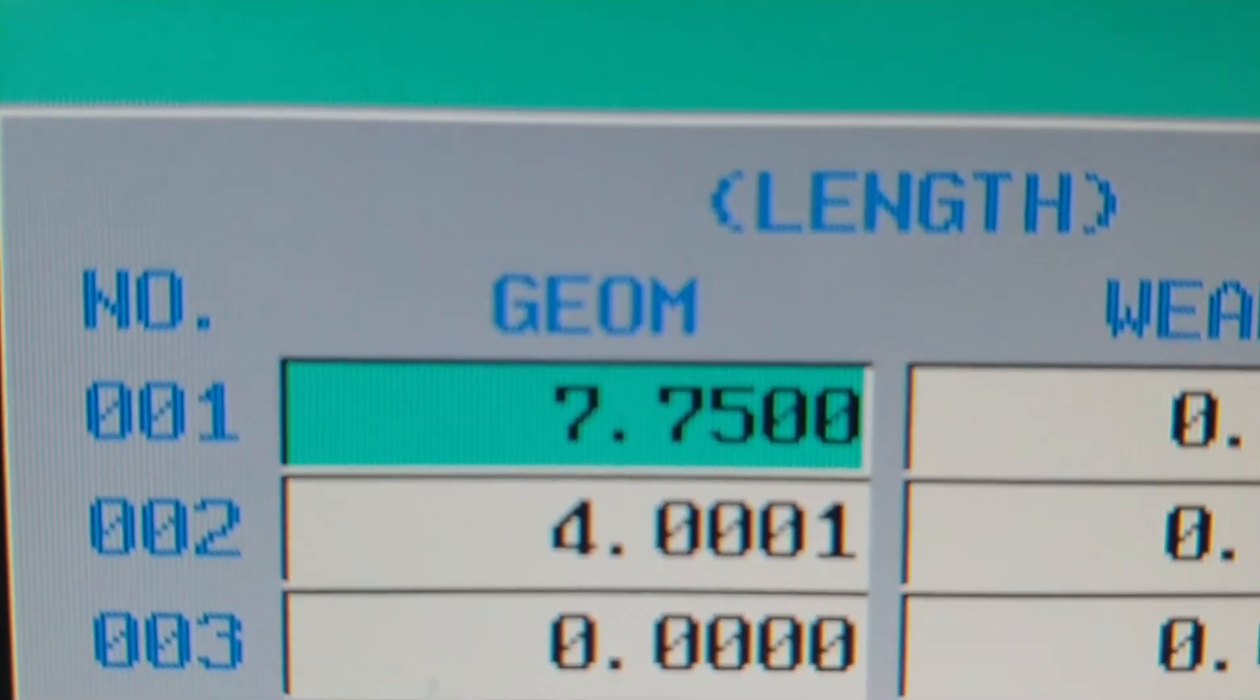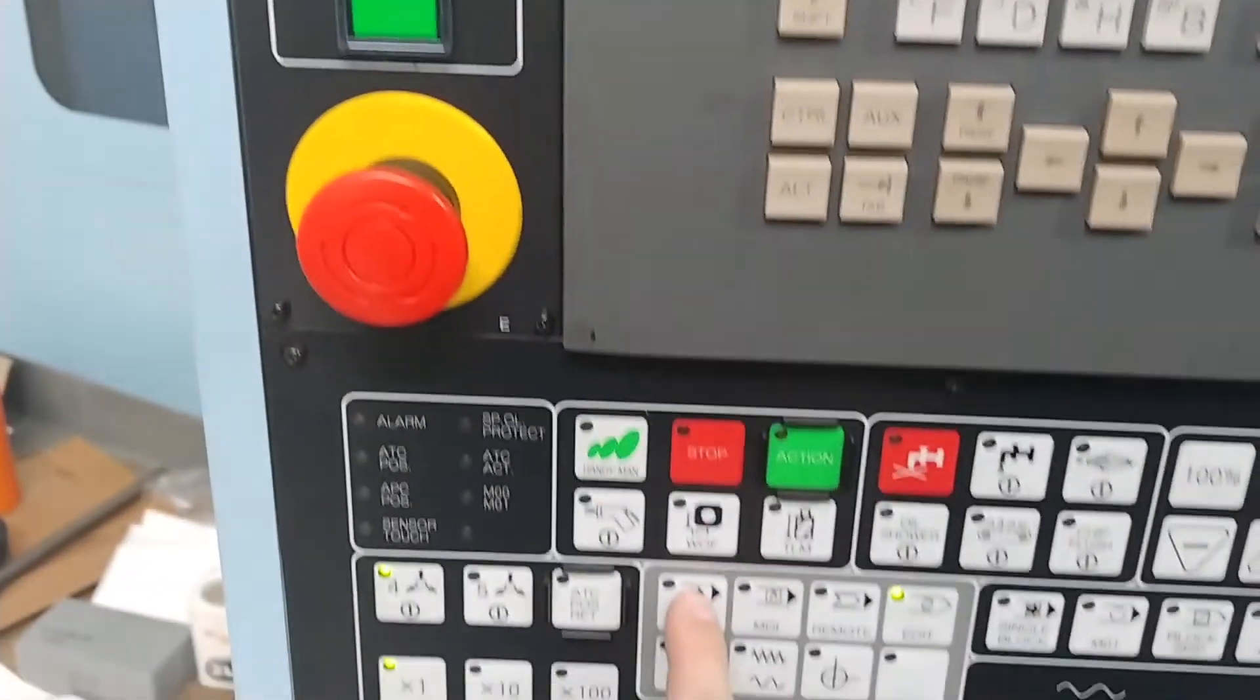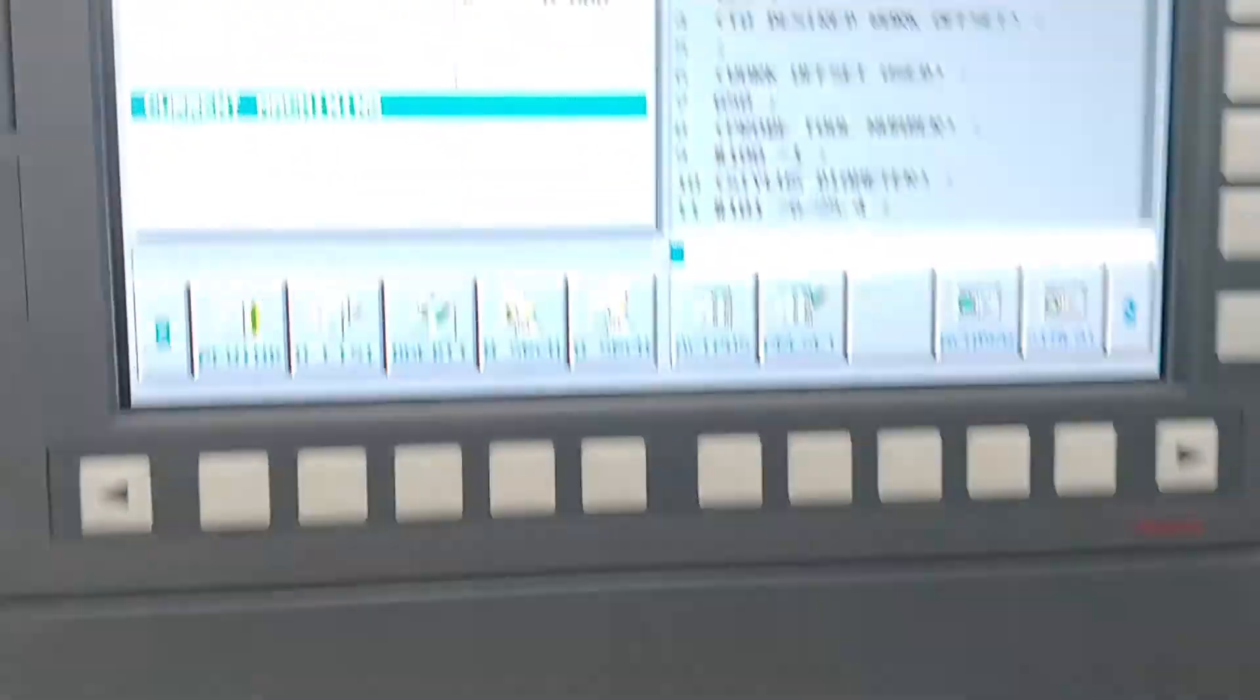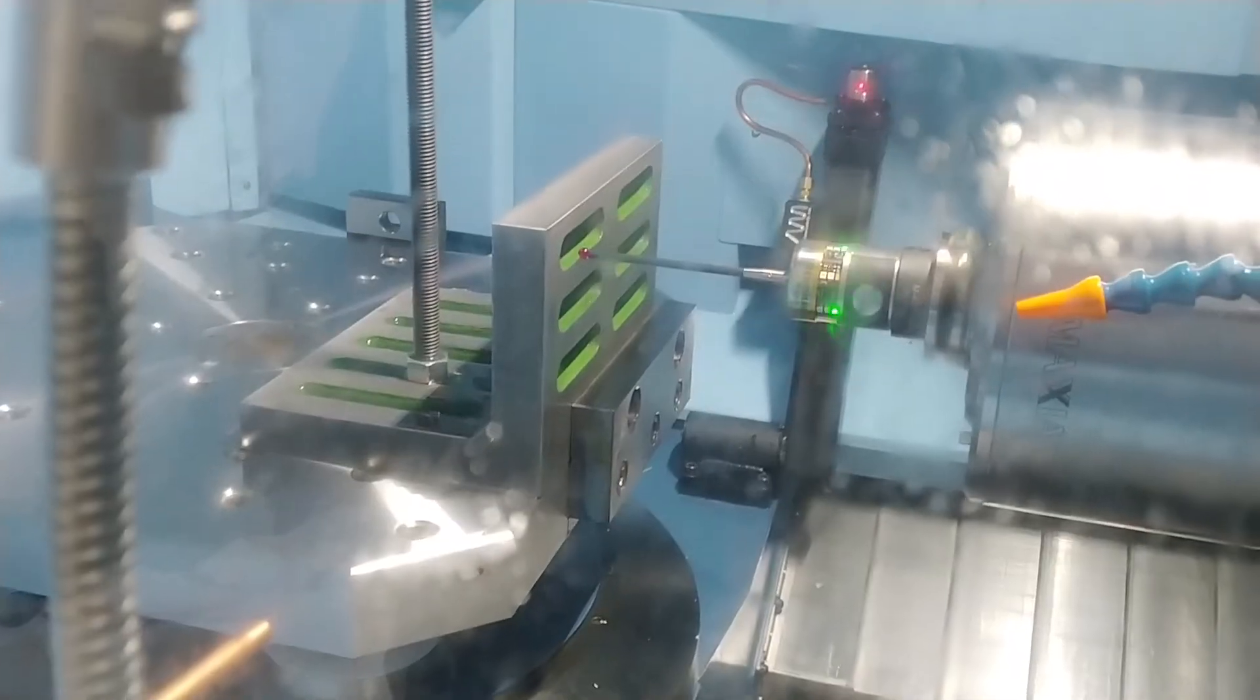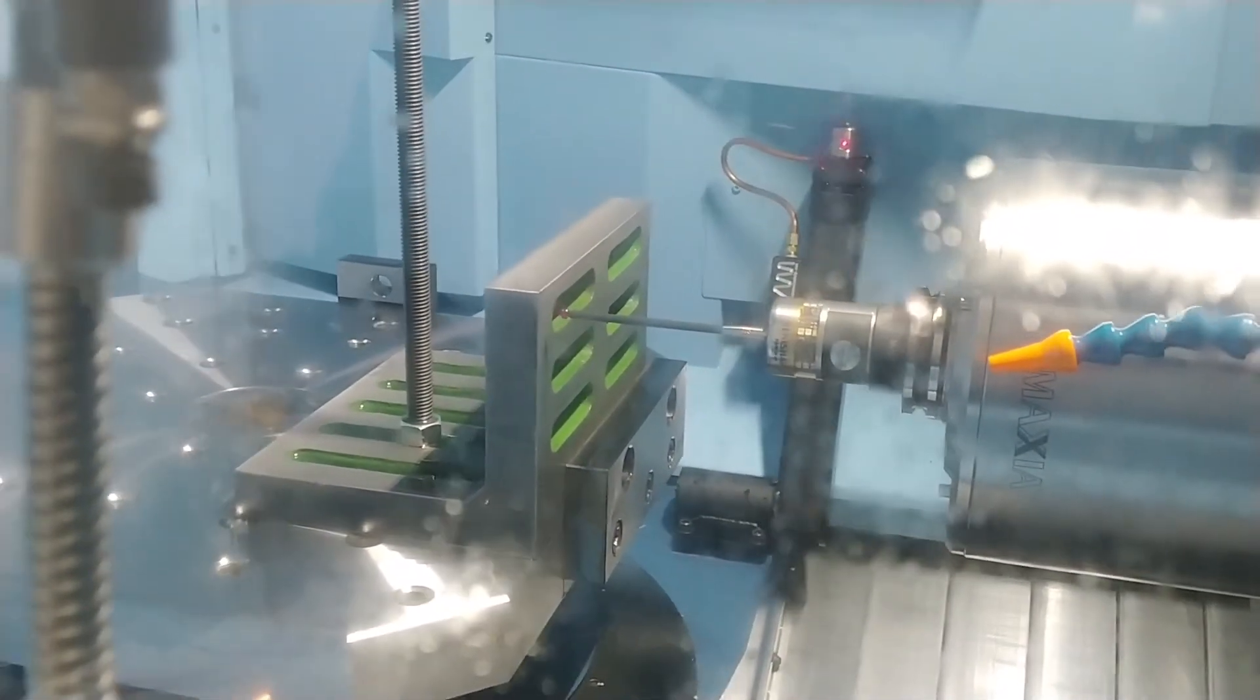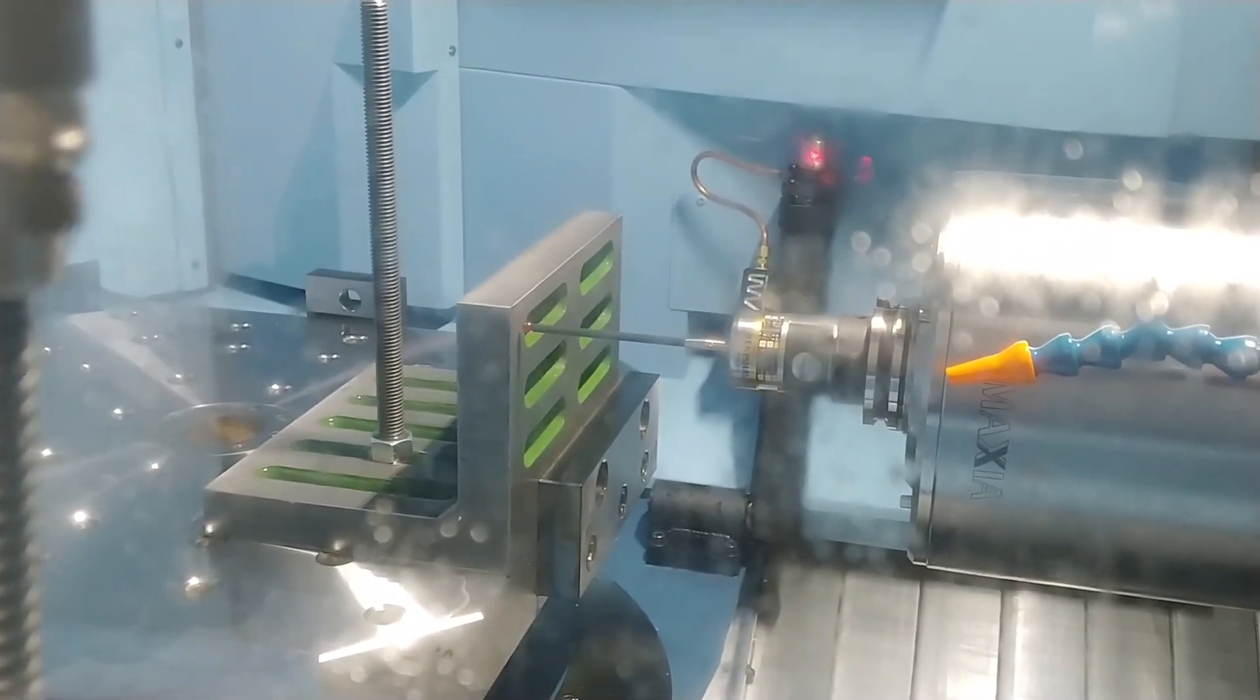Put the machine in memory mode and press cycle start to run the program. The machine will probe the surface. Once the cycle is completed, the probe is calibrated in the Z direction.